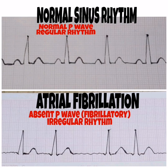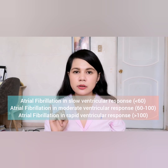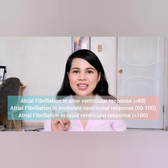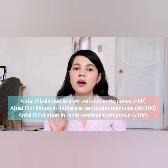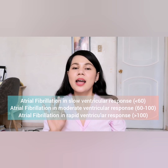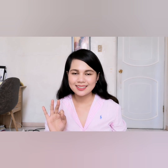There are three responses found in atrial fibrillation: atrial fibrillation with slow ventricular response, which has a heart rate of less than 60; atrial fibrillation with moderate ventricular response, with a heart rate of 60 to 100; and atrial fibrillation with rapid ventricular response, with a heart rate of greater than 100.